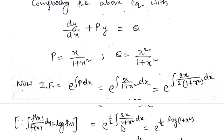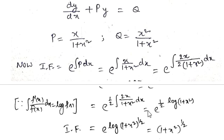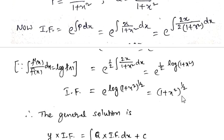Since d/dx of (1 + x²) = 2x, this confirms f'(x) = 2x. So the answer is e^((1/2)·log(1 + x²)), which can be written as e^(log(1 + x²)^(1/2)). Using the property log(m^n) = n·log(m), and e^(log f(x)) = f(x), this simplifies to (1 + x²)^(1/2). So the integration factor is (1 + x²)^(1/2).